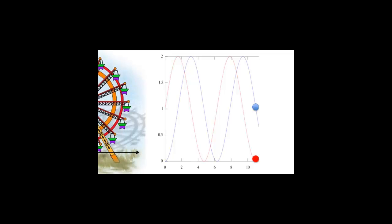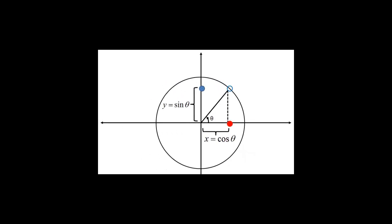In fact, we can describe the x component of our motion using a cosine function, and the y component using a sine function. Together, these x and y coordinates will trace out a circle. This circle should be familiar to you from trigonometry. Having defined the angle theta from the horizontal, the x component is given by x equals cosine theta, and the y component is given by y equals sine theta.